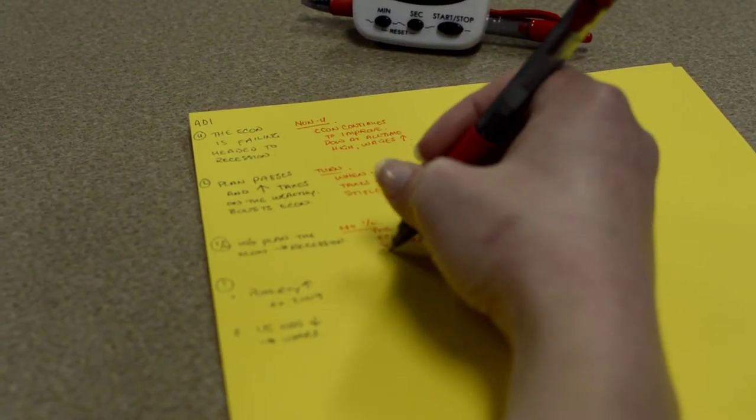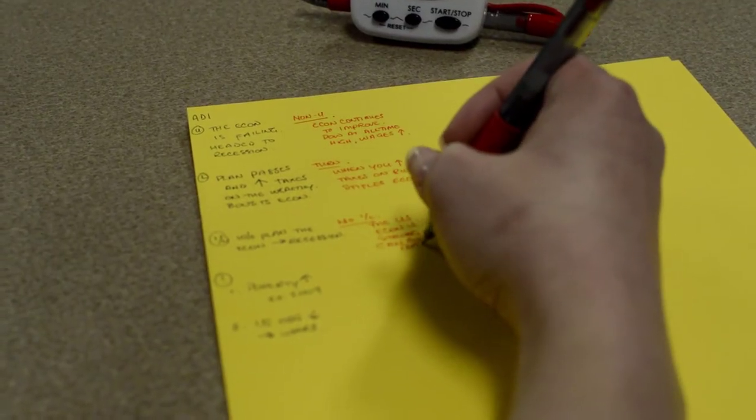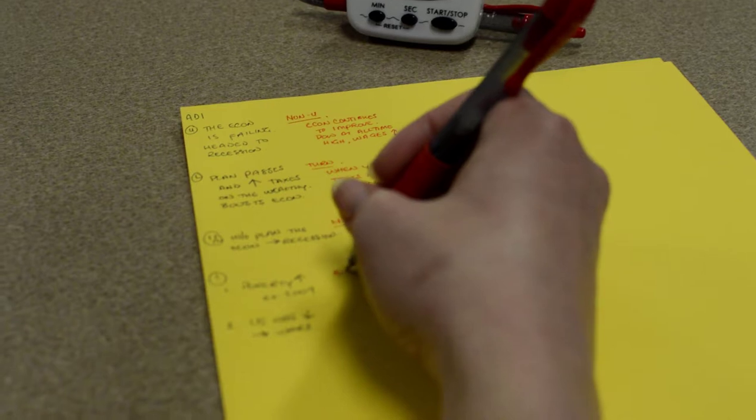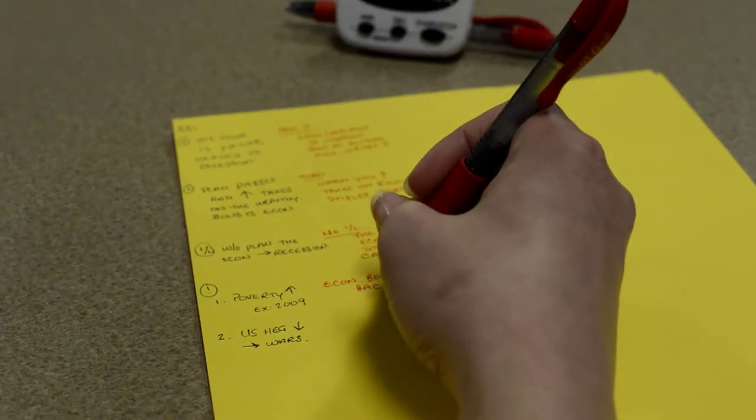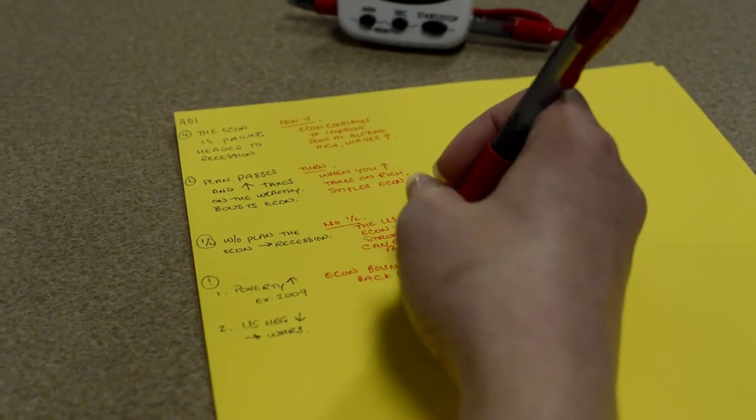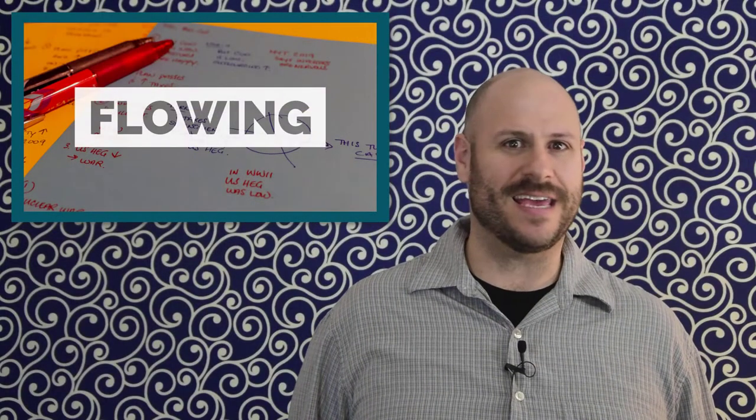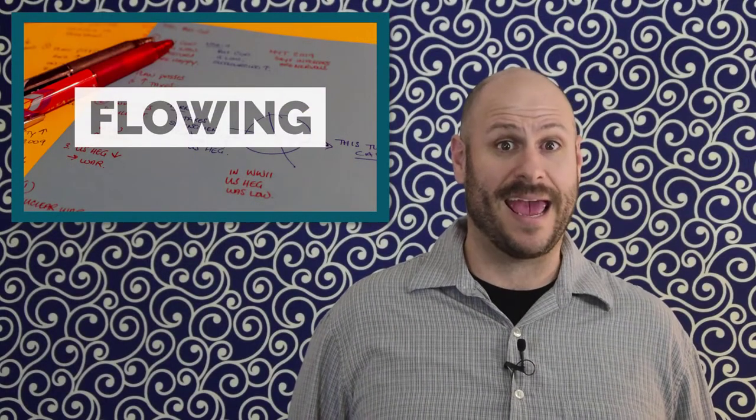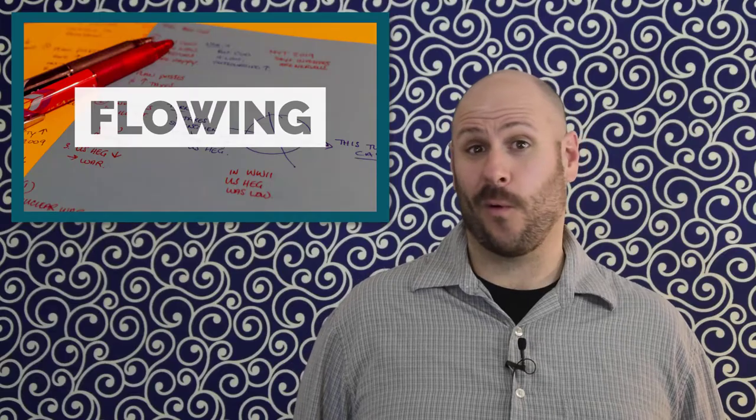This would continue for the rest of the arguments the affirmative made. Doing the line by line creates a wall of ink on the flow. In order for an affirmative team to rescue their advantage, they must spend time in their next speech to refute all of these points. Failing to do so will allow you to point out that they dropped your argument when it's your turn to speak next. This often means that you are able to defeat key arguments your opponent made, and in the case of the affirmative's advantage, this means they lose the ability to win. Now that you're starting to get an idea of how important flowing is, let's explain how the heck you do it.